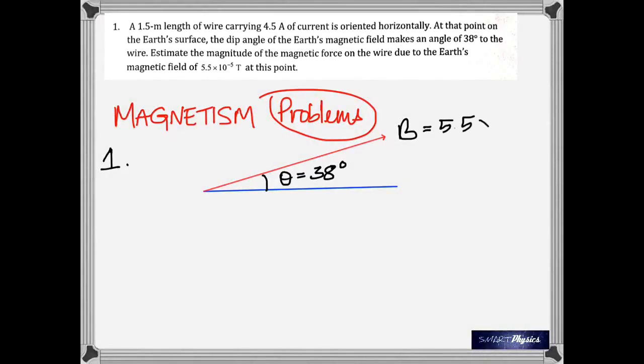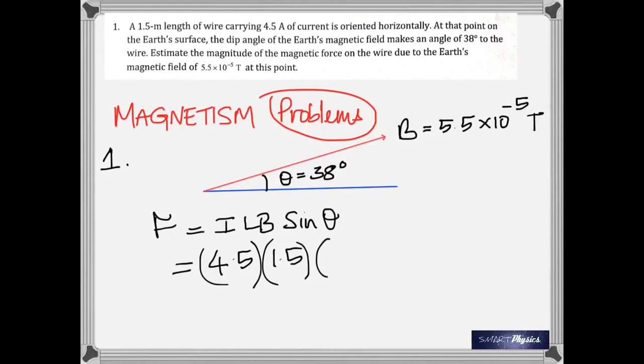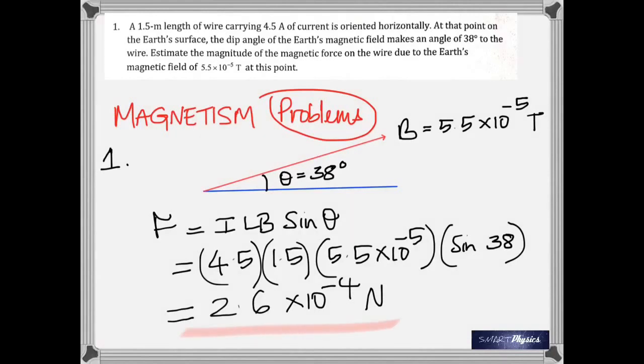All quantities are given here. The magnetic field B of the earth, the length, the angle and the current, all are given. So write down the equation, substitute the numbers. Take care to see that all of them are in the proper units which they are in this case. And calculate the answer as 2.6 times 10 to the negative 4 newtons because it's a force.